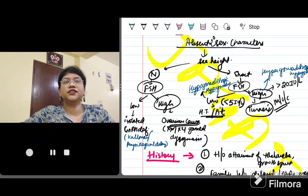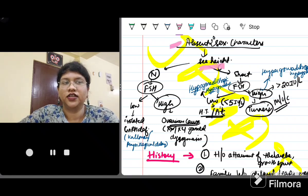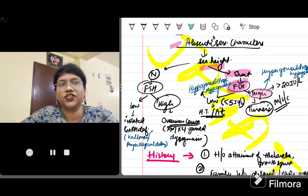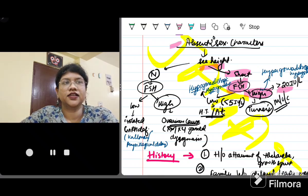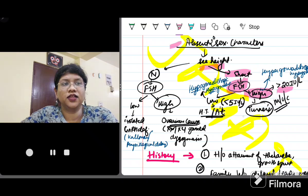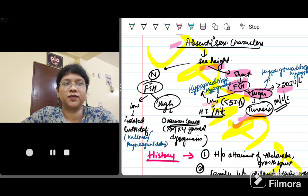Now coming to if the secondary sexual characteristics are absent, then you have to look for the height of the patient. If she is short, then you have to do her FSH, very important. If her FSH is high, high means more than 20 international units per liter, then it is a case of hypergonadotropic hypogonadism. This turns towards a problem in the gonads, and the most common cause of primary amenorrhea is Turner's syndrome. So you are going to suspect Turner's syndrome. Her height is short, her FSH is high, and there is absent secondary sexual characteristics.